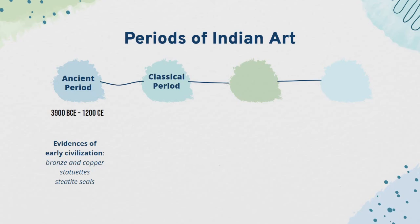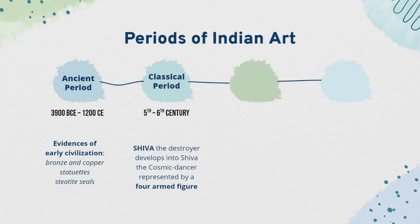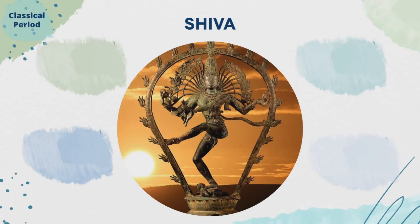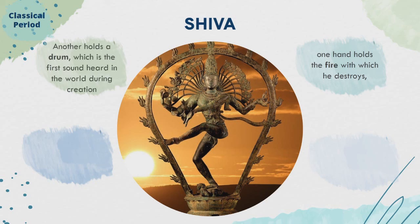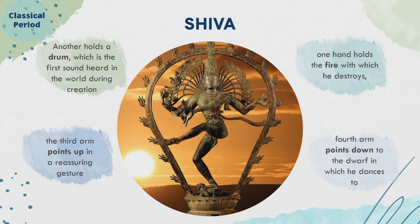Including paintings and sculptures considered to be masterpieces of Buddhist religious art, as well as frescoes that are reminiscent of the Sigiriya paintings in Sri Lanka. Next is the Classical Period, 5th to 6th century. Shiva the Destroyer develops into Shiva the Cosmic Dancer, represented by a four-armed figure. His one hand holds the fire with which he destroys, another holds a drum — the first sound heard in the world during creation — the third arm points up in a reassuring gesture, and the fourth arm points down to the dwarf on which he dances.